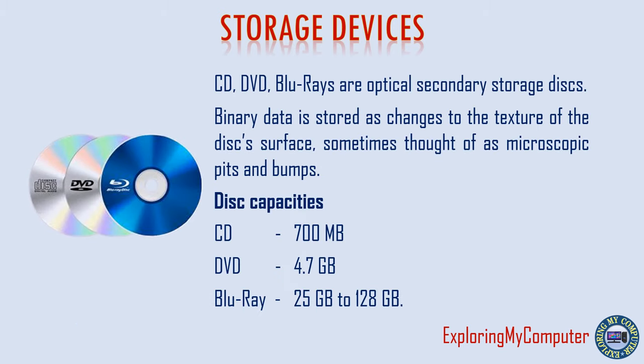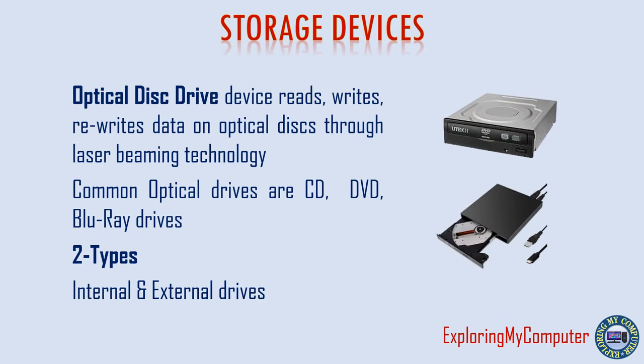CD, DVD and Blu-rays are optical secondary storage disks. Binary data is stored as changes to the texture of the disk surface, sometimes thought of as microscopic pits and bumps. Disk capacities are: CD 700 MB, DVD 4.7 GB, Blu-ray 25 GB to 128 GB. The Optical Disk Drive reads, writes and rewrites data on optical disks through laser beaming technology. Common optical drives include CD, DVD and Blu-ray drives, available as internal and external types.